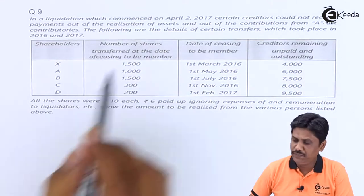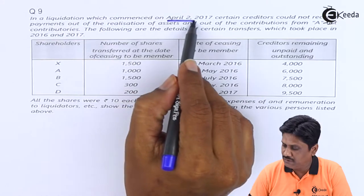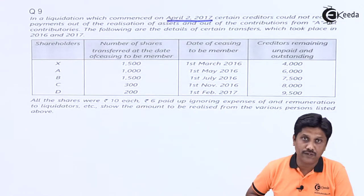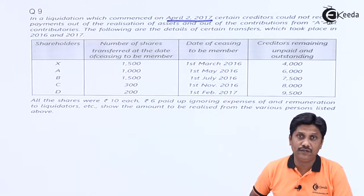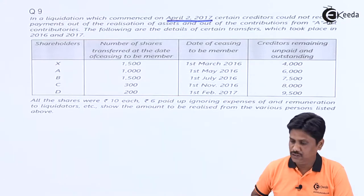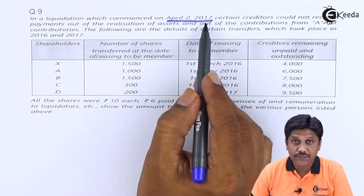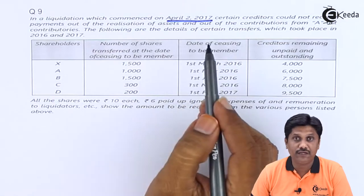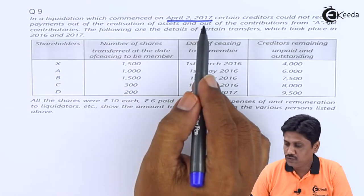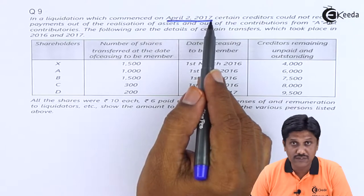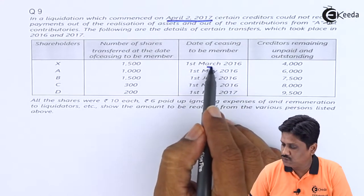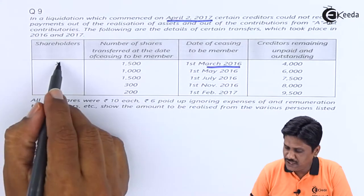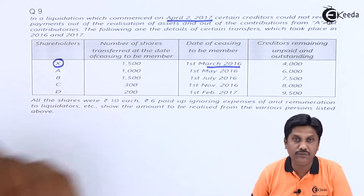Importantly, we begin our liquidation on 2nd April 2017. As per the rule, List B contributors will include only those transferors who have transferred their shares within a year before the date of liquidation. Considering this date, the transfer should have taken place between 3rd April 2016 and 2nd April 2017. Here, Mr. X's transfer took place on 1st March 2016, so Mr. X cannot be called a List B contributory.